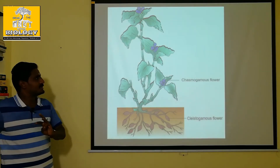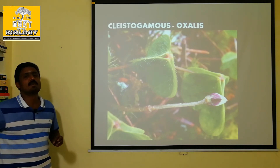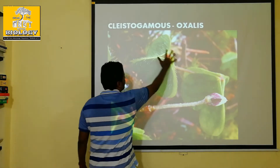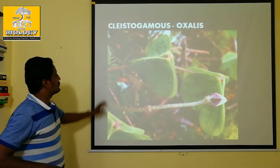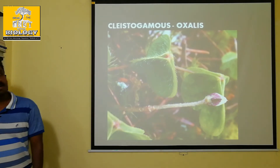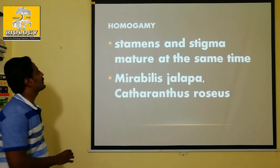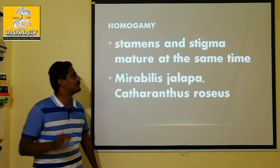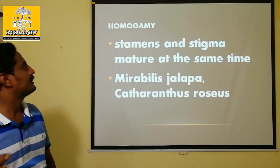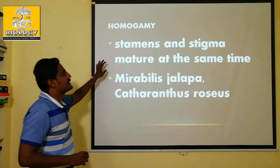In Cleistogamy, another example is Oxalis — a plant where the flower structure supports closed, self-pollination. Now, for Homogamy: the stamen and stigma mature at the same time period. Examples of Homogamy include Mirabilis jalapa and Catharanthus roseus.